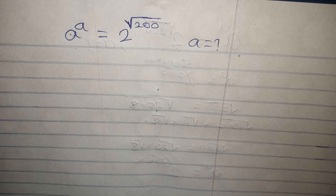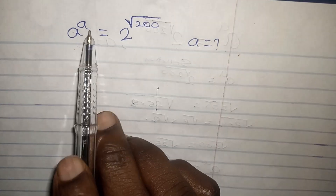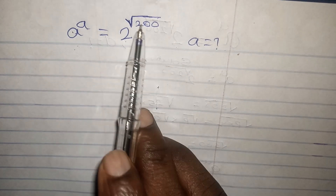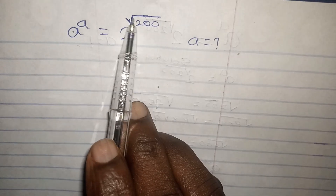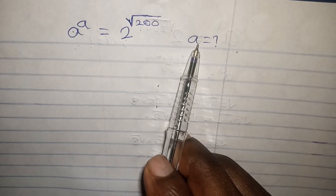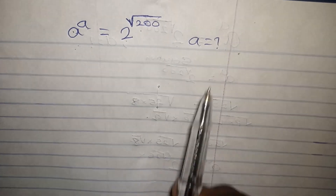Welcome guys to my channel. In today's video I want to solve another exponential challenge which reads: a to the power of a is equal to 2 to the power of root of 200. So we are looking for the possible value for a.